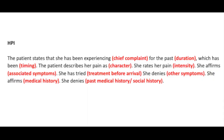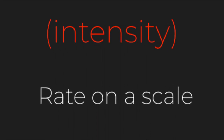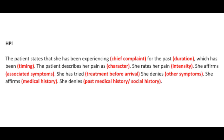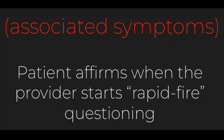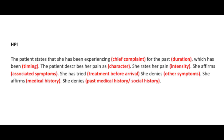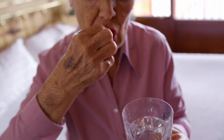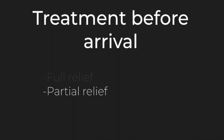She rates her pain as intensity — placing the chief complaint on a scale of 1 to 10. She affirms associated symptoms, which are all the things the patient confirms when the provider rapid-fires questions about related or unrelated symptoms to determine next steps in care. She has tried treatment before arrival — anything done to feel better, such as taking medications or applying heat or cold compresses. It's important to state whether the treatment helped: full, partial, or without relief.